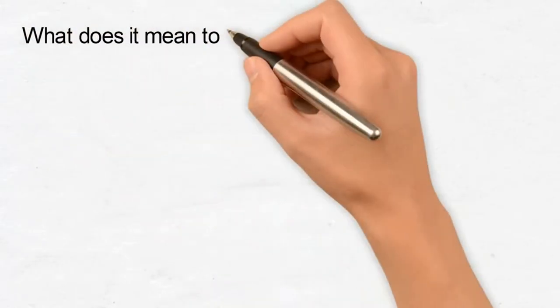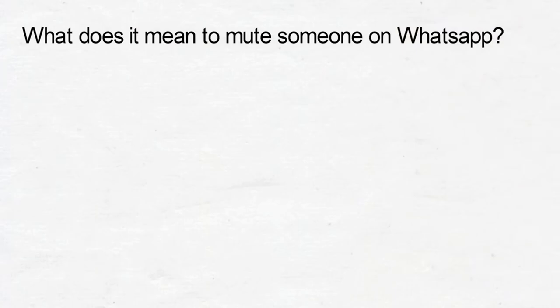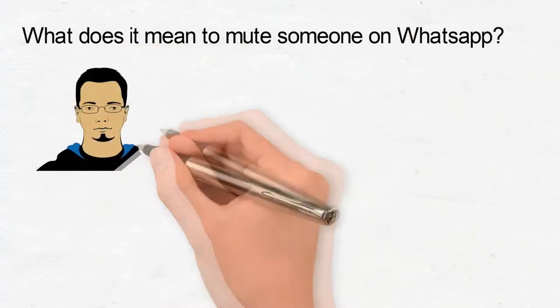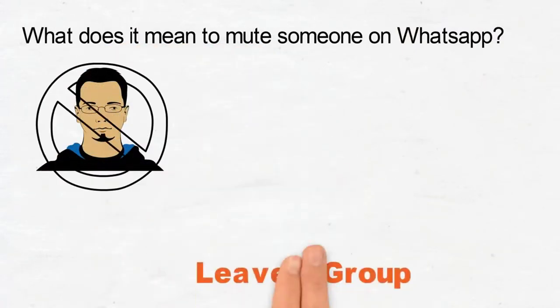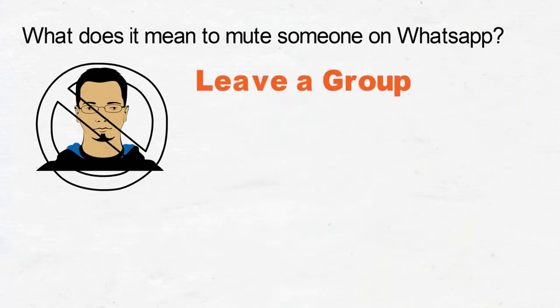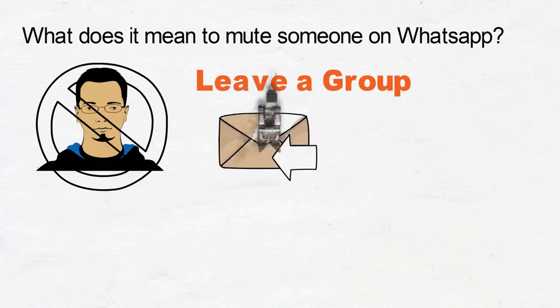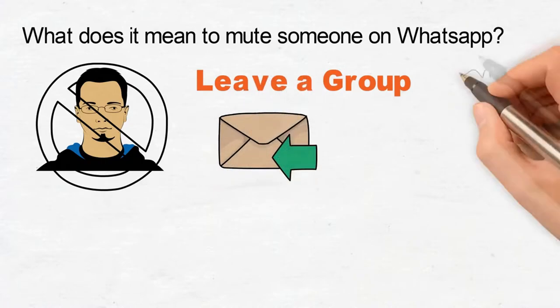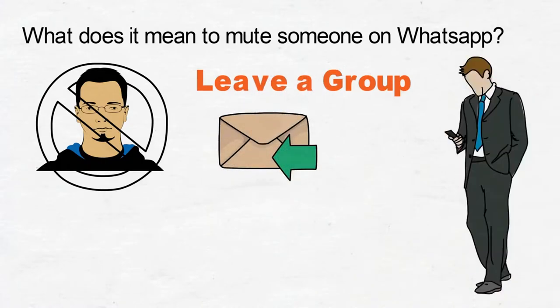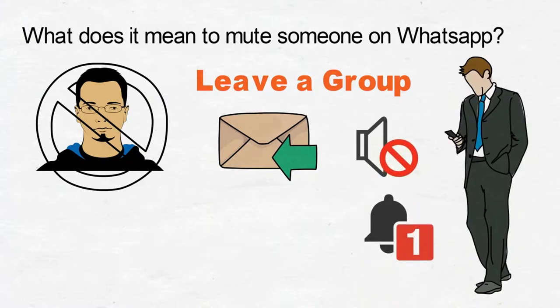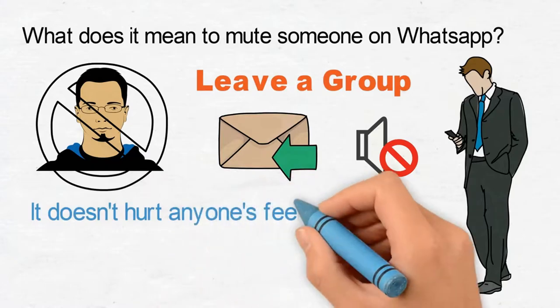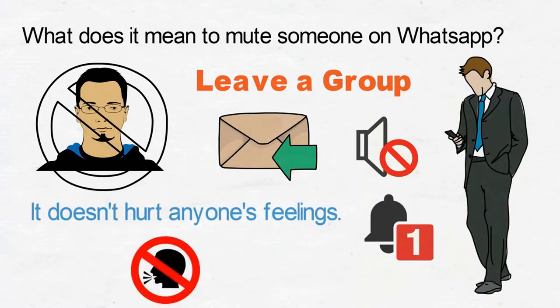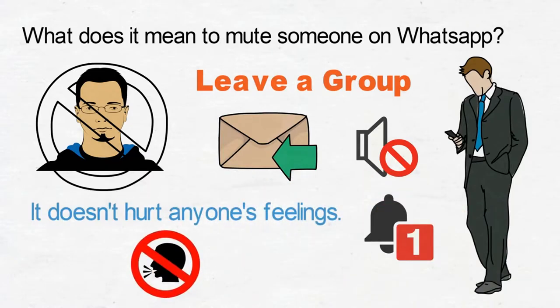First of all, it is important to know what does it mean to mute someone on WhatsApp. Of course, it does not mean to block the person or leave a particular group. It simply means when a particular contact or group on WhatsApp is sending new messages, you will not receive any alerts like sounds, vibration, and notifications. It doesn't hurt anyone's feelings while you are still free from annoyance and disturbance.